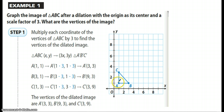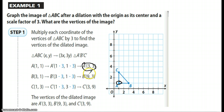Looking at the coordinates, I see A is at (1, 1), which is the same as what the author has. So A prime will be 1 times 3 for X and 1 times 3 for Y, giving us (3, 3). Let me change colors so we know exactly what we are doing.